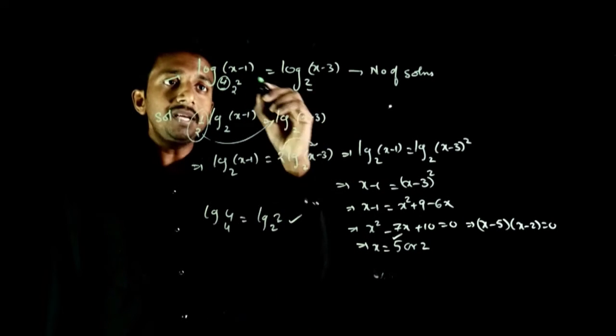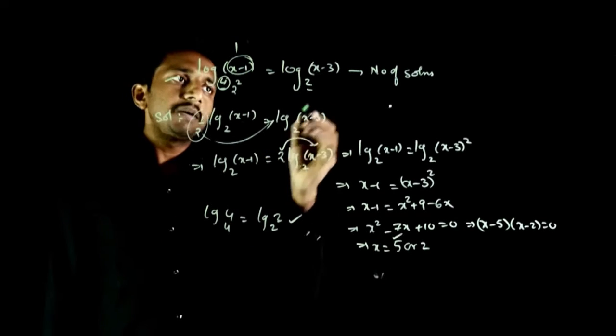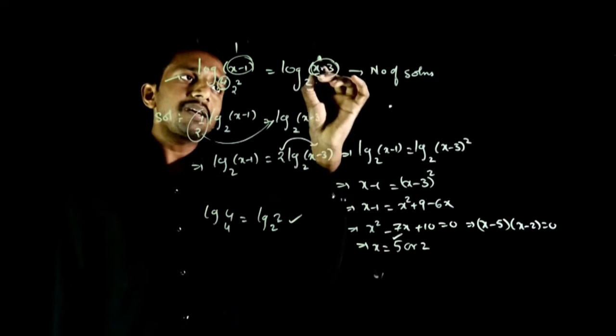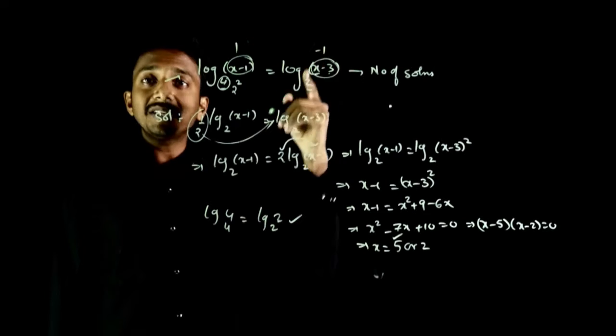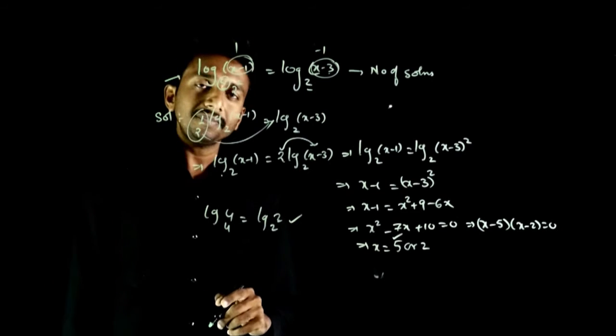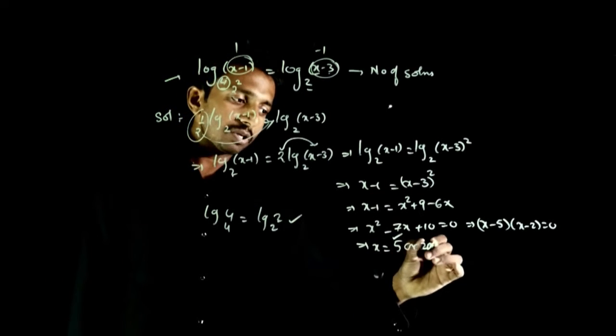But for x=2: 2-1 is 1, but 2-3 is -1. Log base 2 of (-1) is not defined. So x=2 is not a valid answer.